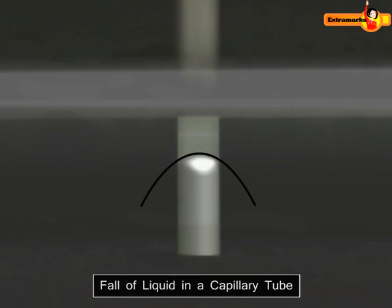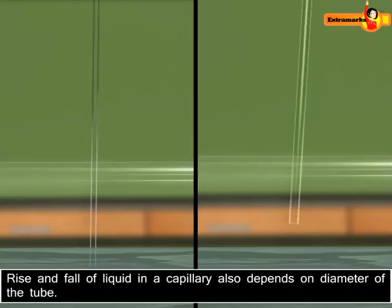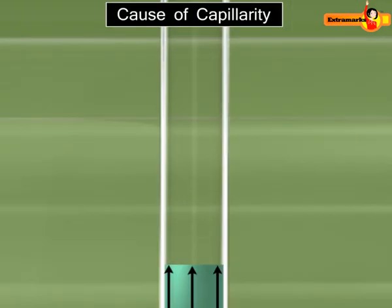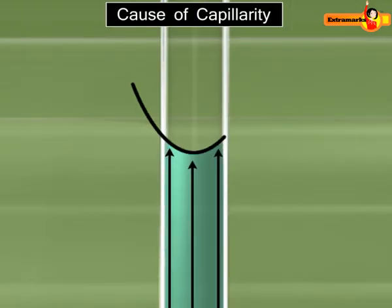The rise or fall of the liquid in the tube depends on the diameter of the bore and the density of the liquid. Capillarity is one of the consequences of pressure difference across a curved liquid-air interface.